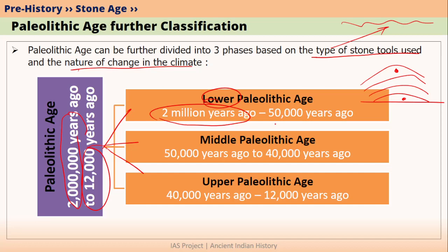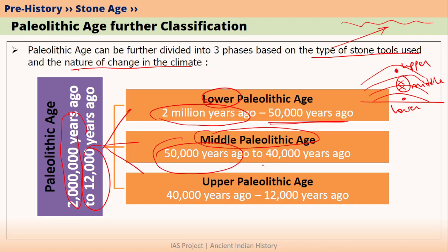The second part is called Middle Paleolithic Age. The remains can be found between Lower Paleolithic Age and Upper Paleolithic Age — which is nothing but the middle part. Middle Paleolithic Age started 50,000 years ago and lasted up to 40,000 years ago. Therefore, the time period of Middle Paleolithic Age is smaller compared to Lower Paleolithic Age or Upper Paleolithic Age.